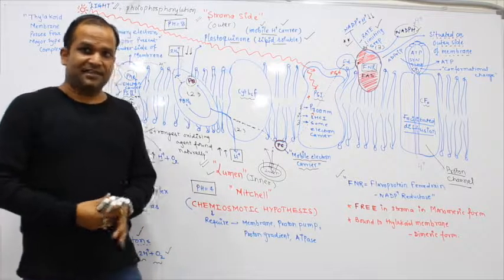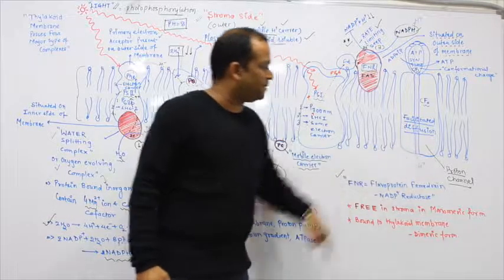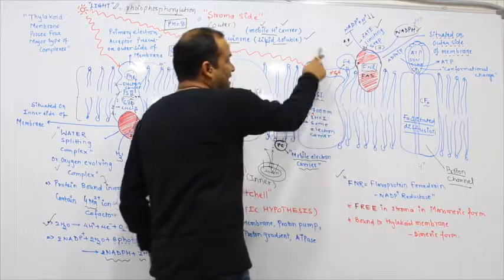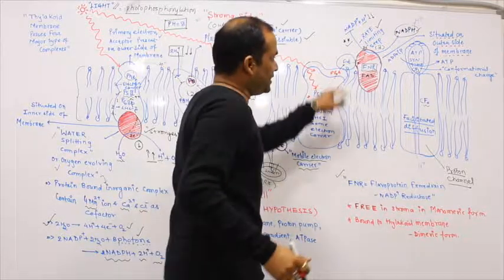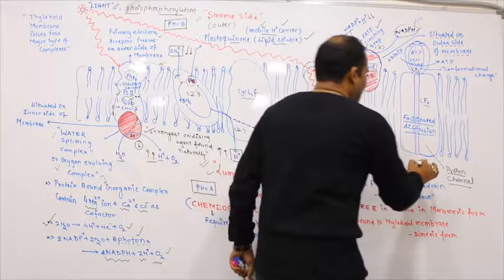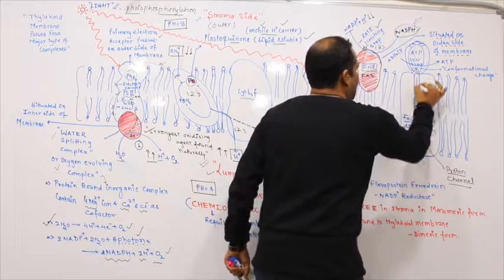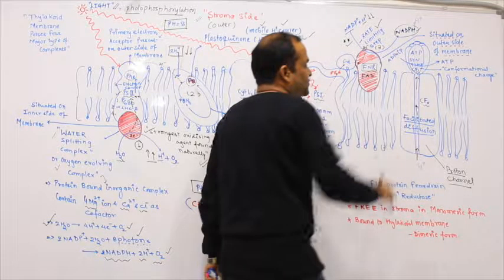Because the proton gradient is created, this gradient is broken by the F0 subunit and protons are transported through this F0 particle.